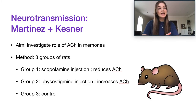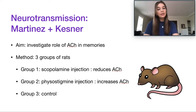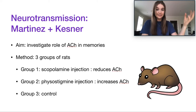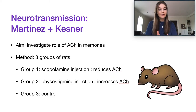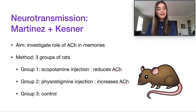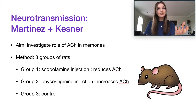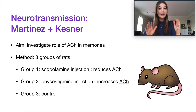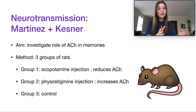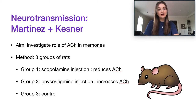Martinez and Kessner split rats into three groups. Group one received a scopolamine injection, which blocks the acetylcholine receptor sites on the dendrites of the next neuron, reducing how much acetylcholine is available. Group two received physostigmine, which blocks the production of cholinesterase — an enzyme that degrades the neurotransmitter — thereby increasing available acetylcholine, keeping it active in the synapse for longer. The third was a control group that received no injection, serving as a baseline for comparison.